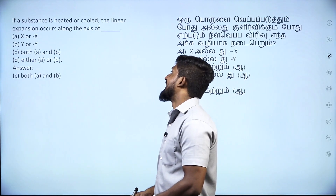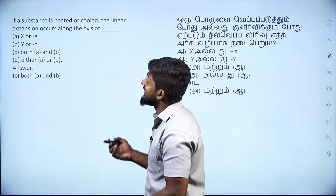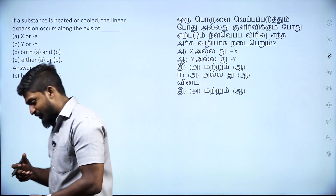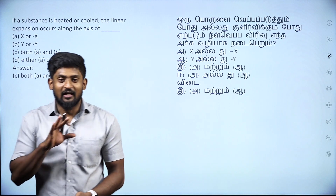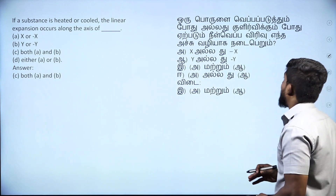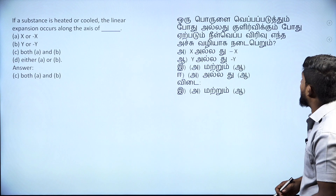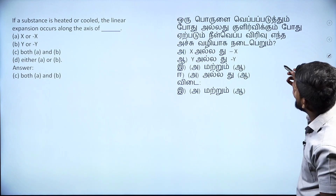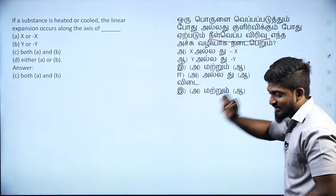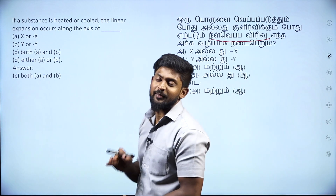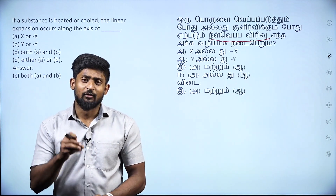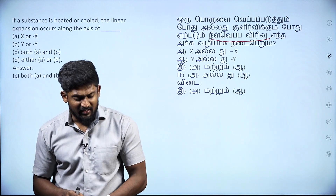Next: if a substance is heated or cooled, the linear expansion occurs along the axis of. Let's explain — linear expansion. Tell us about the railway track. That is another simple example. Tell us about the railway track — in the sky, they put in a gap.